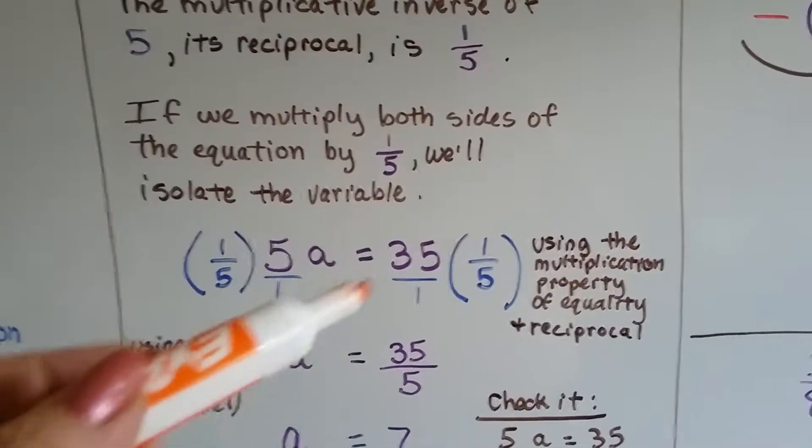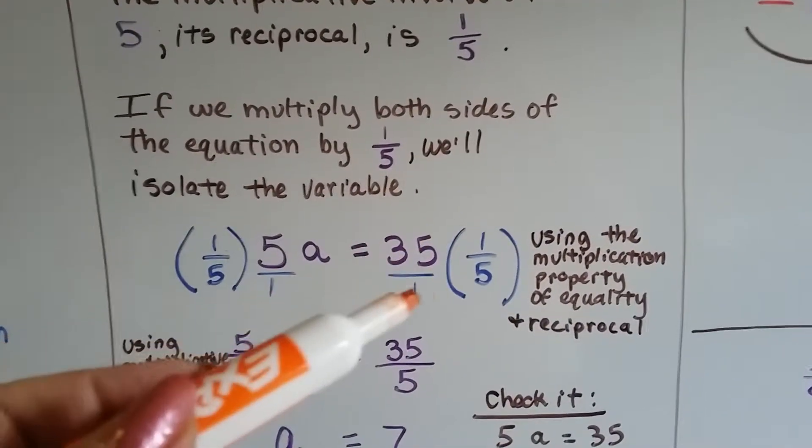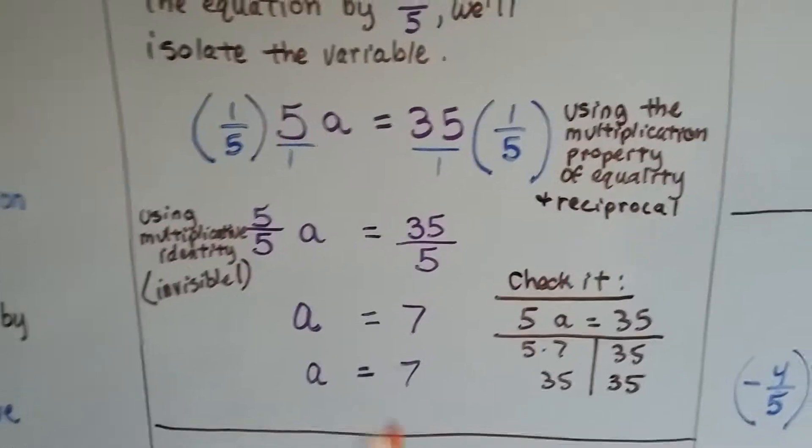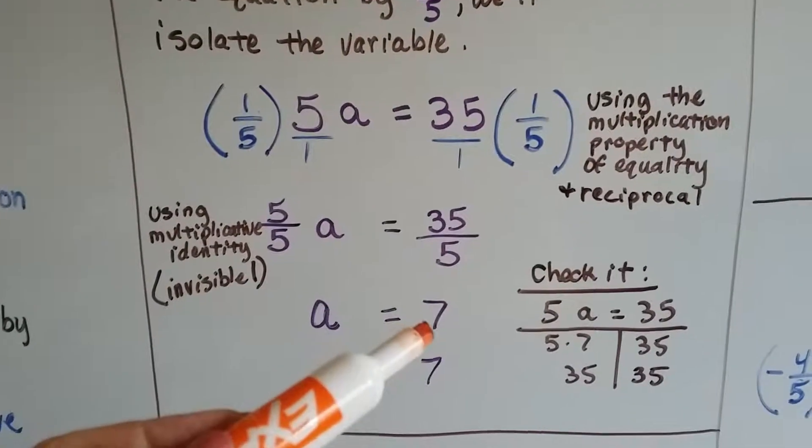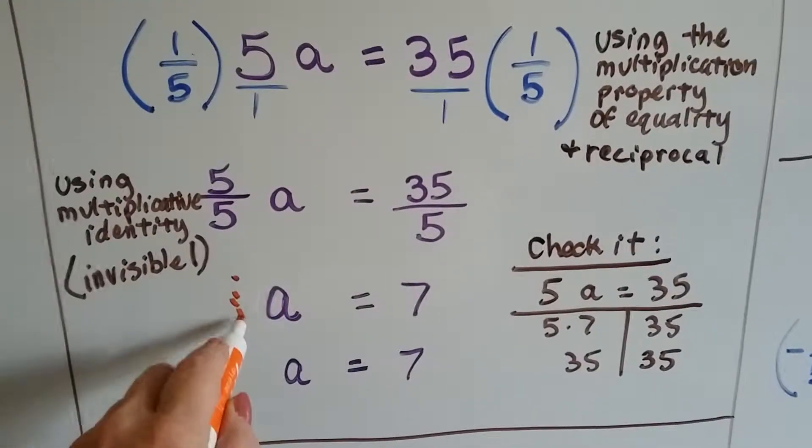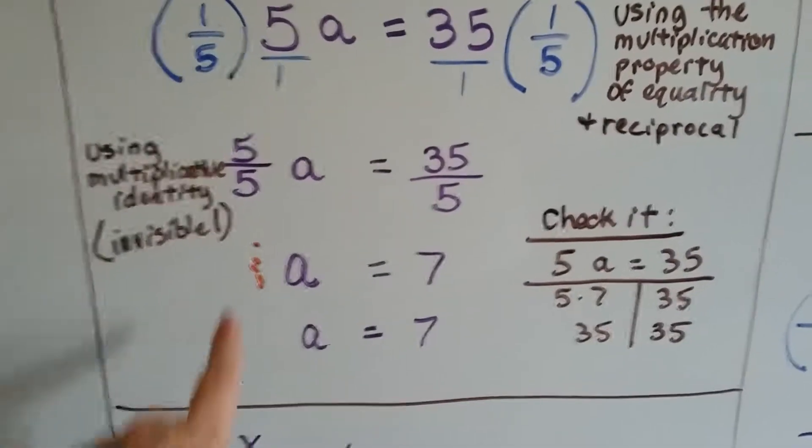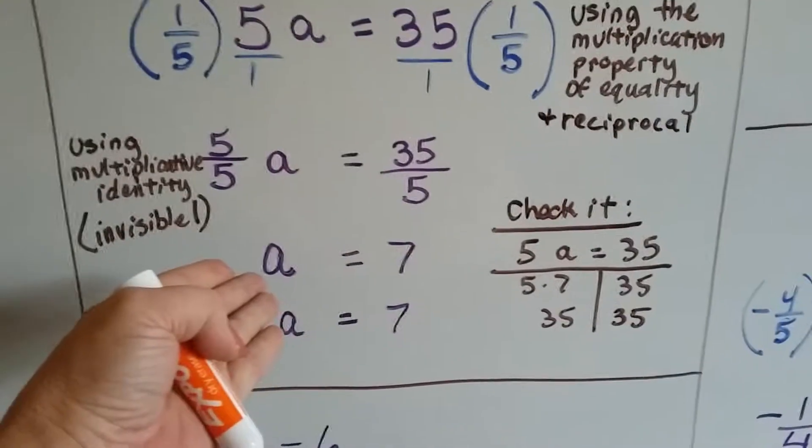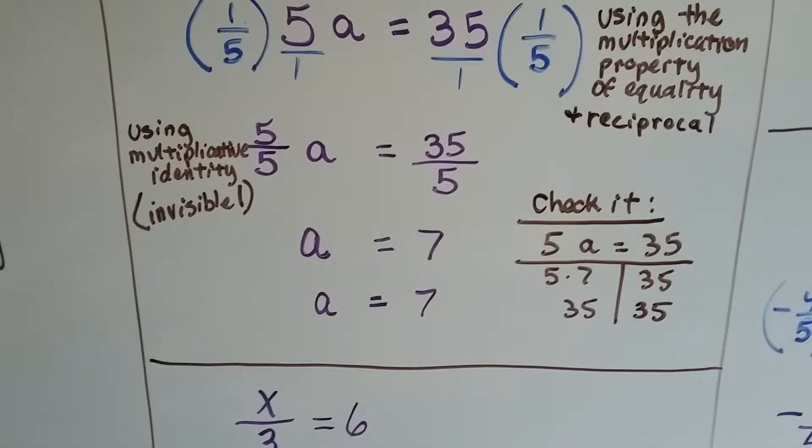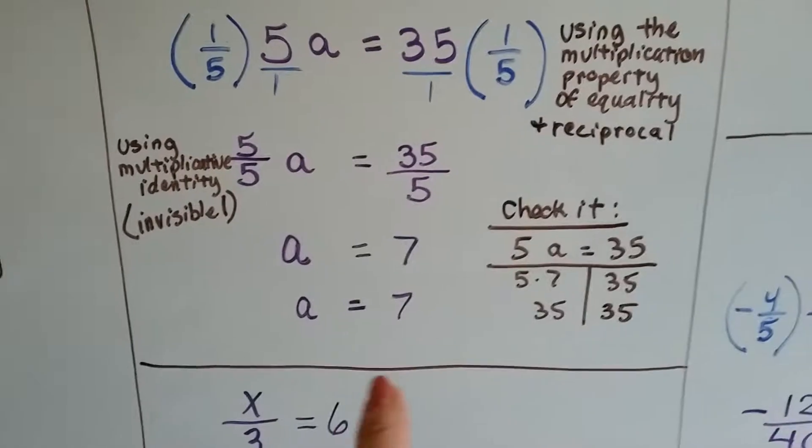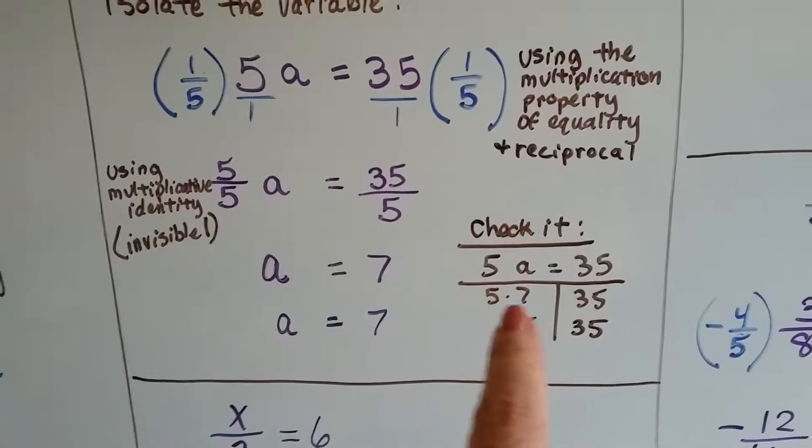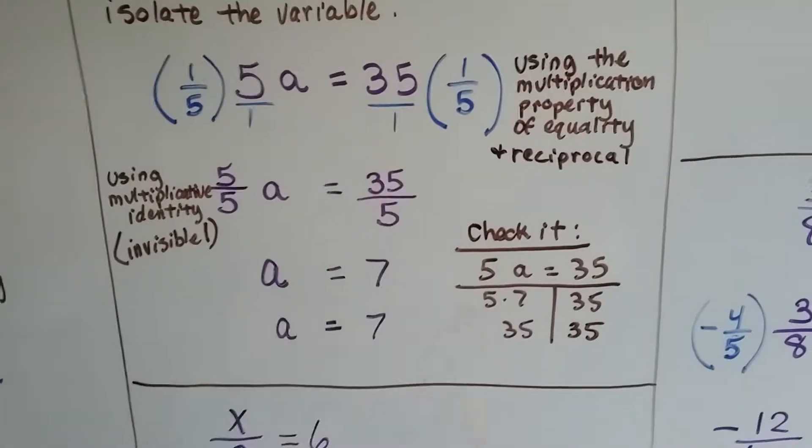On the left side, we have five over 5a, and on the right side, we have 35 over five, and we can simplify 35 over five as a seven. This five over five is our friend, the invisible one. We don't need to write him because we can see there's one a there. That's the multiplicative identity, our friend, the invisible one. All we have to do is plug the seven in as an a and check to see if we did it right. Five times seven is 35. Yep, we did it right.